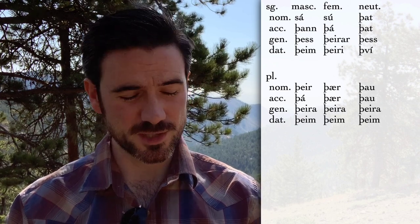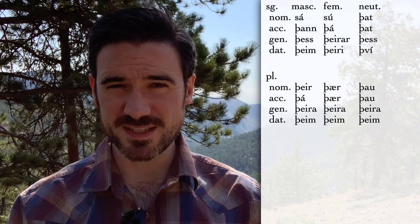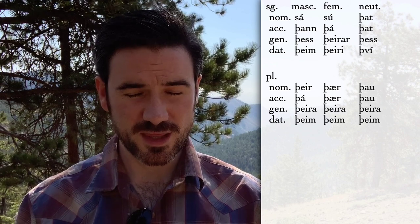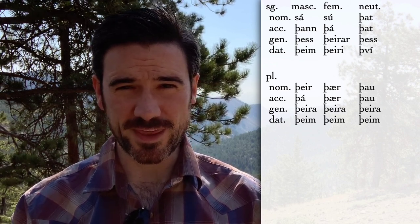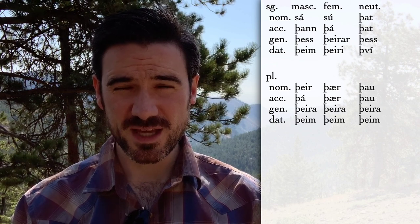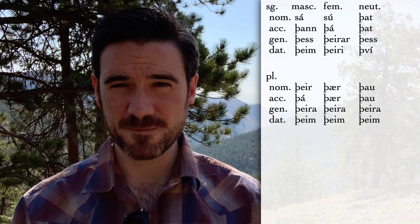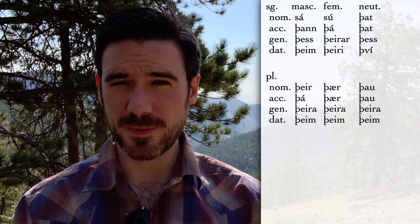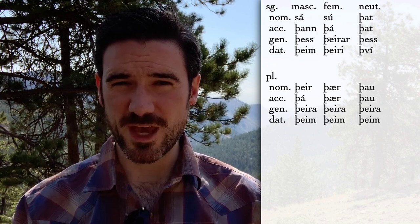The forms are: masculine — sá, þann, þess, þeim, þér, þá, þeirra, þeim; feminine — sú, þó, þeirar, þeiri, þér, þá, þeirra, þeim; neuter — þat, þat, þess, því, þau, þau, þeirra, þeim.